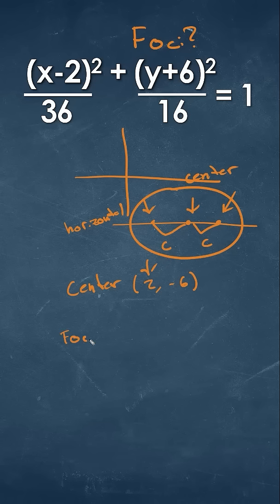Now the foci is going to be equal to C, and we can figure out C by taking C squared is equal to A squared minus B squared. Where this is going to be our A squared, this will be our B squared.